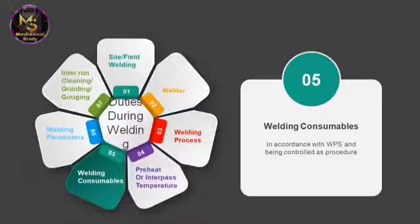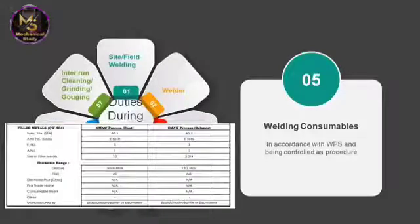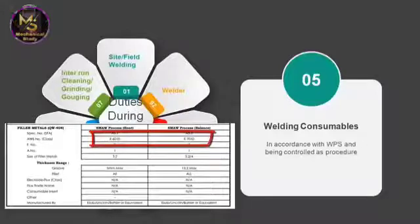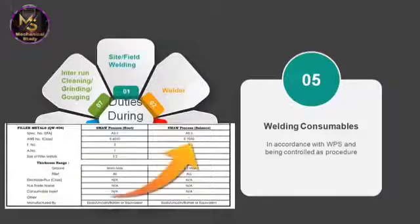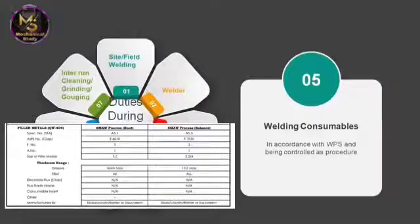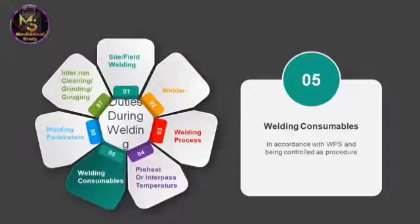For welding consumables during welding, the same method applies as before welding. Consumables should be used as specified in the WPS. Low hydrogen electrodes should be controlled and stored as specified. In this WPS, two electrode types are used: E6010 for the root pass, and E7010 for the rest of the process — including hot pass, filling, and capping.